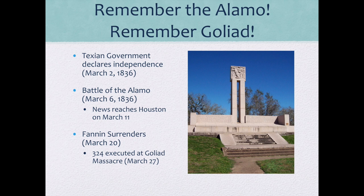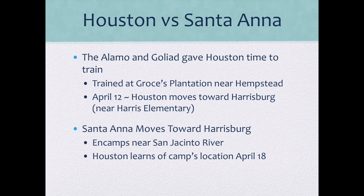The government declared independence on March the 2nd, and the Battle of the Alamo happened on March the 6th. Houston received word later from some survivors — women, children, and slaves who had been hiding in the Alamo were allowed to leave after the battle and ran ahead to tell Sam Houston. Fannin surrendered on March the 20th to Urrea's forces, and although they pleaded for the lives of the Texas soldiers, Santa Ana ordered Urrea to execute them — this is the Goliad Massacre. While the Alamo shouldn't have been defended in the first place, those who stayed and fought gave Houston time to train his troops and prepare for battle.